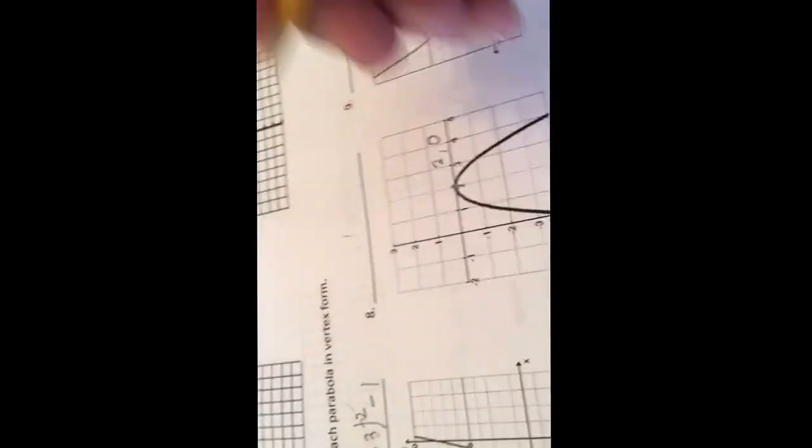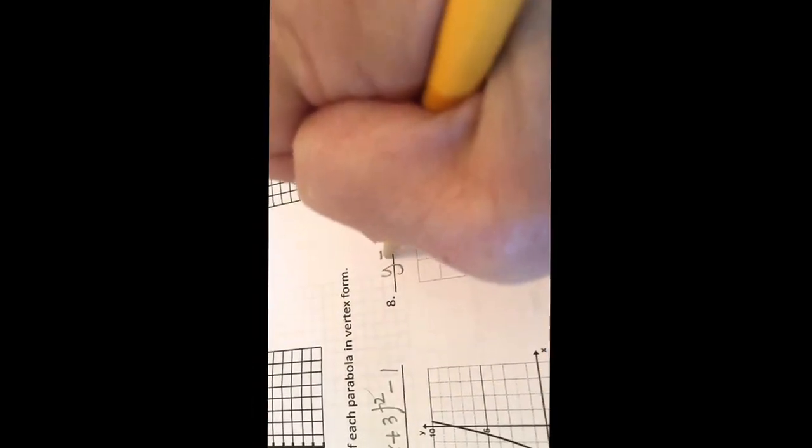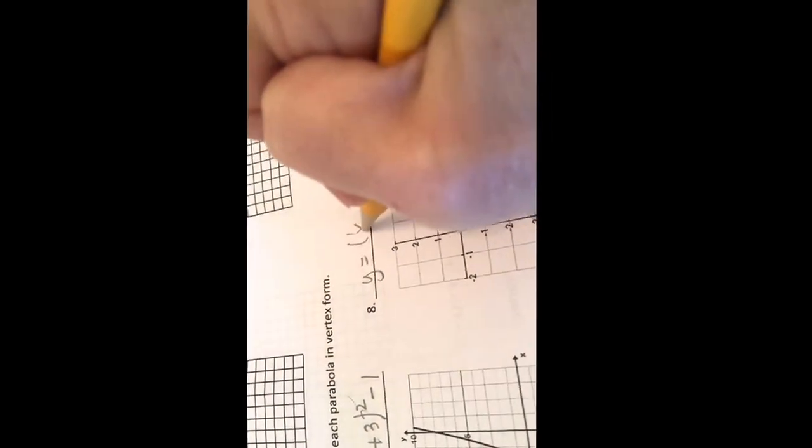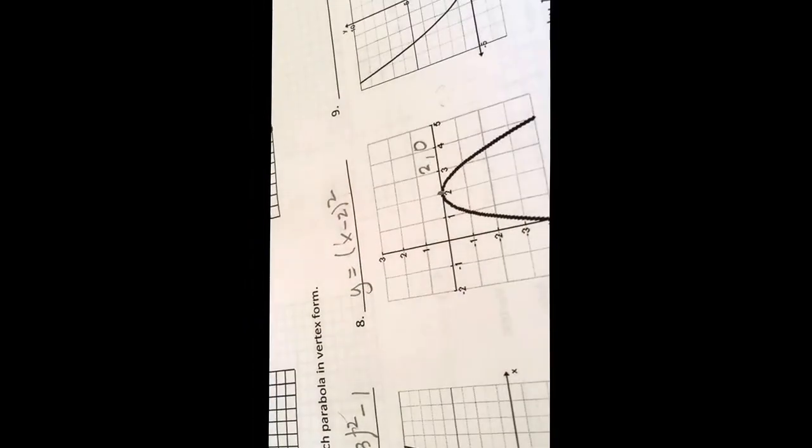Right here, my vertex here is at 2, 0. So this is going to be y equals x minus 2 squared plus nothing.